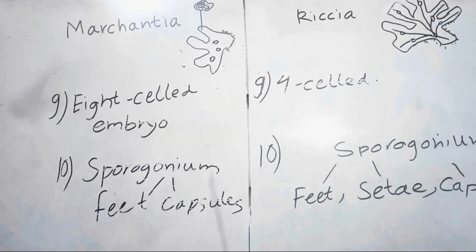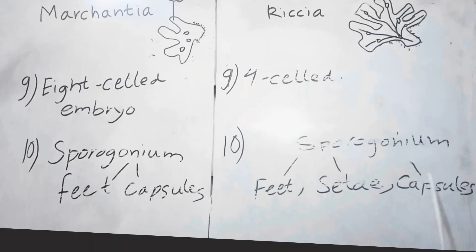In Marchantia, sporogonium is differentiated into foot, seta, and capsule. In Riccia, sporogonium is differentiated into foot and capsule.